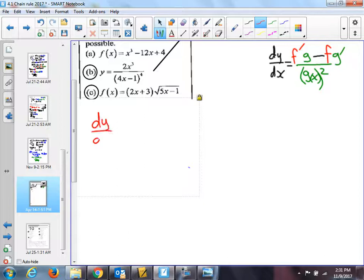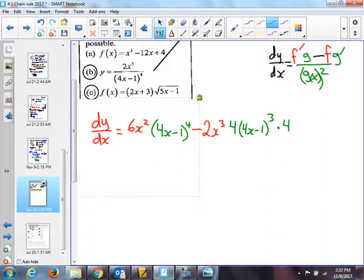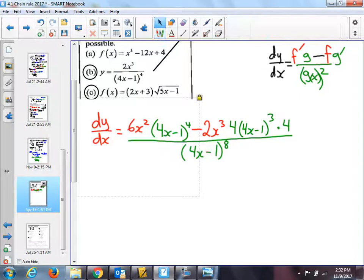We've seen an example of this already, but let's take a look again. The derivative of the top, 2x cubed, is 6x squared. Leave the bottom as it is. The subtraction part is built into the formula. And then I write this down without touching it. Top thing left alone. The derivative of the bottom, that's a composite function. So I bring the 4 down, Q. Leave the inside as is. Now I do the derivative of the inside. That happens to be 4. All over the thing squared to the 8.